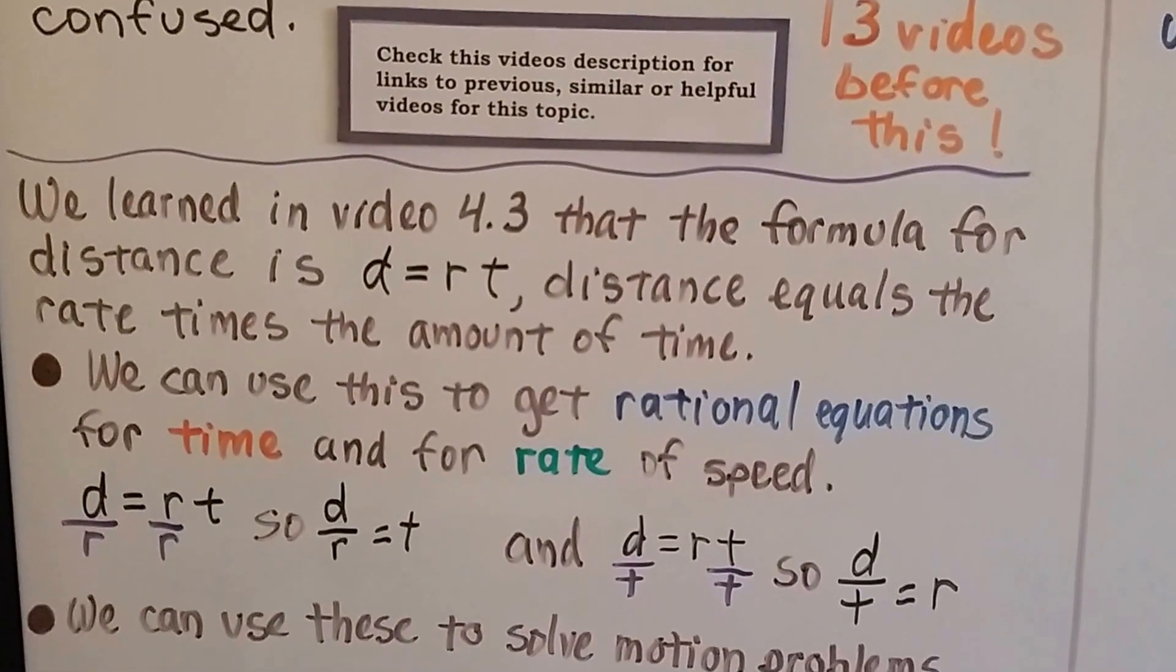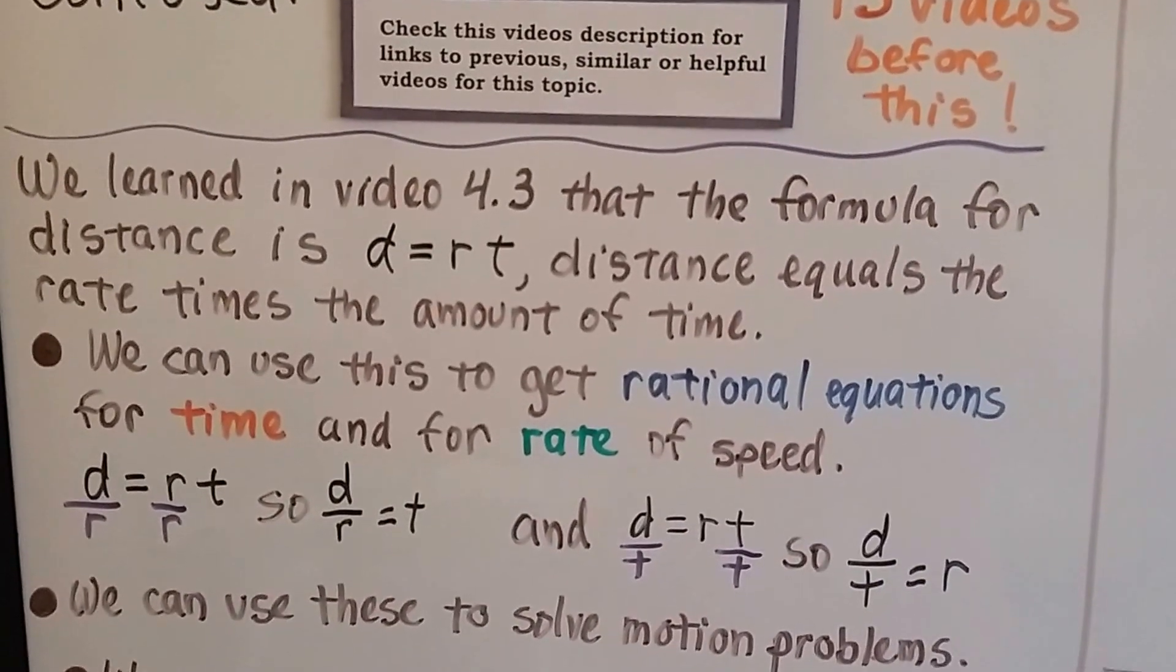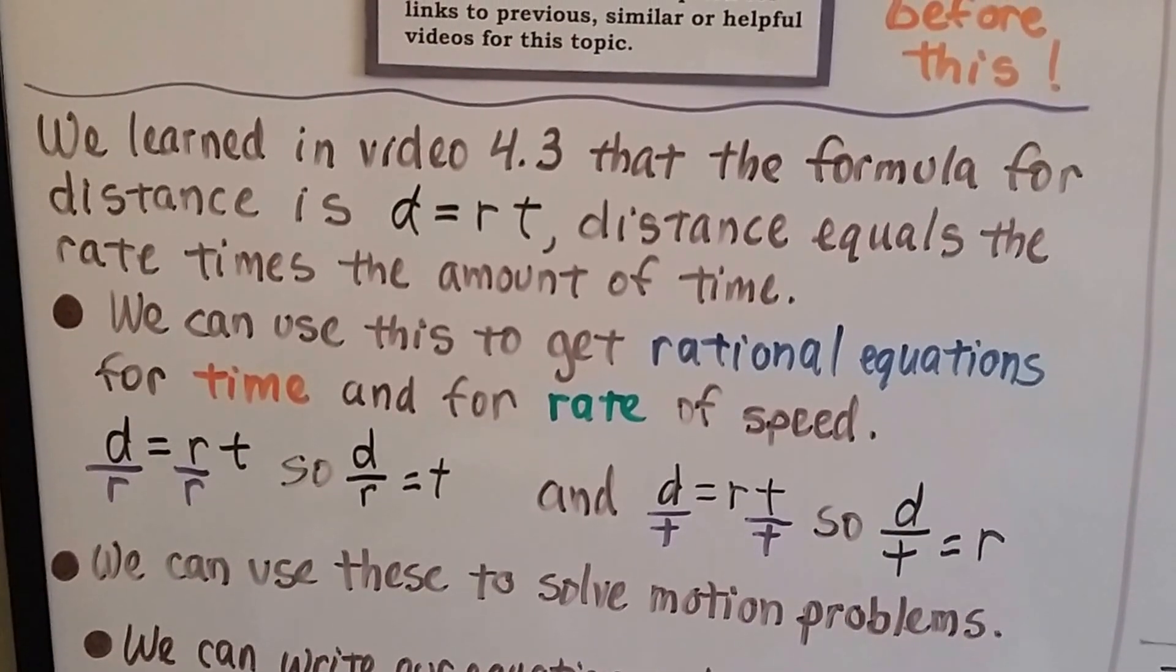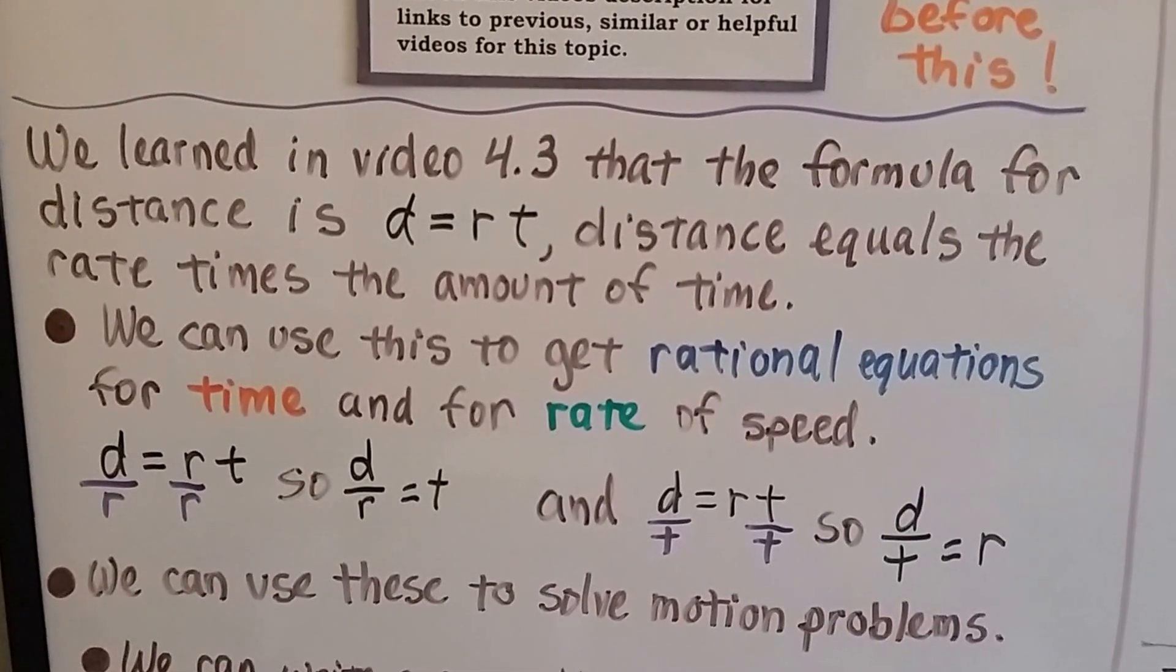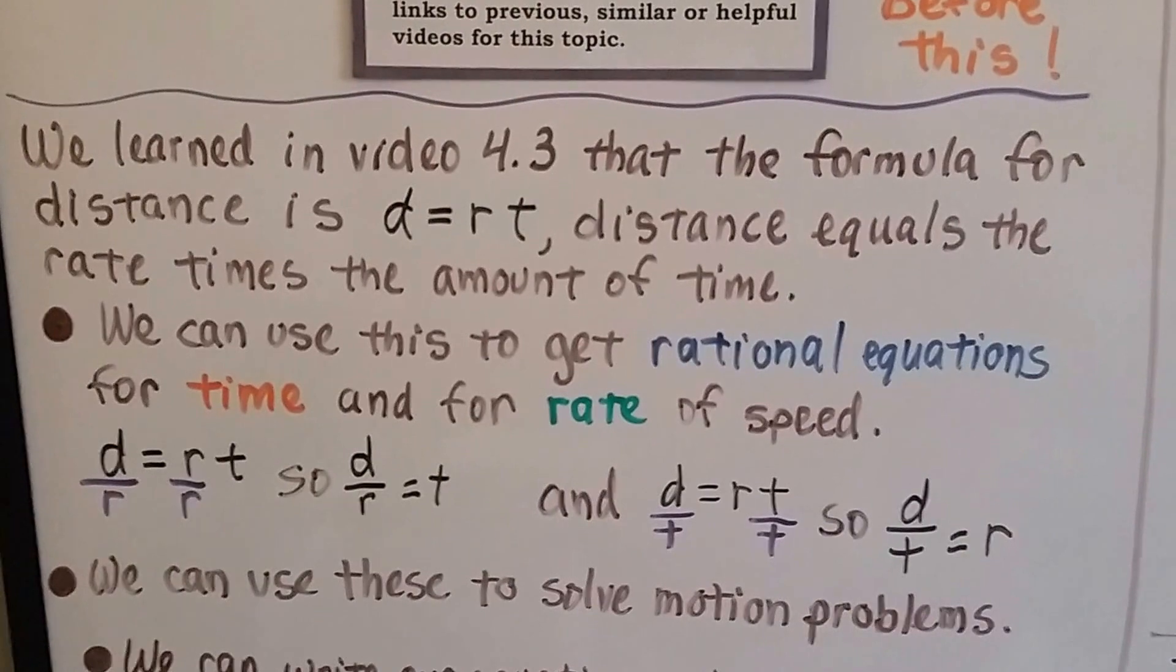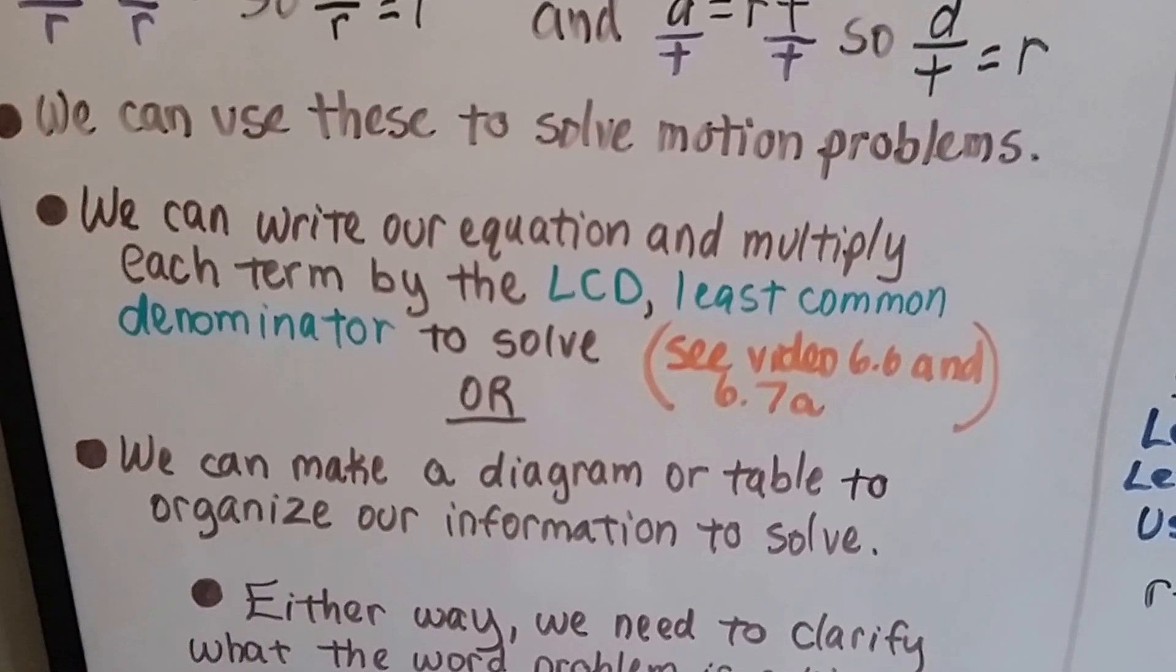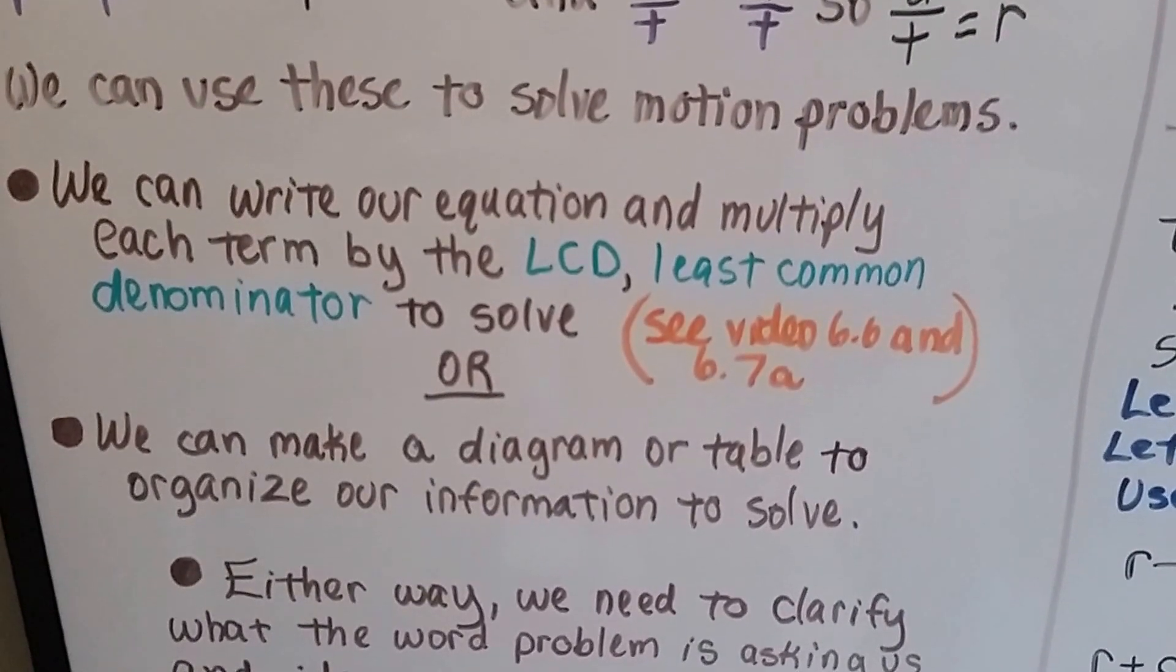So we learned in video 4.3, chapter 4, that the formula for distance is d equals rt, that's distance equals the rate times the amount of time, and we can use this to get rational equations for time and for rate of speed. So d equals rt can be divided on both sides by that r. So we'll get d over r equals t, because we cancel out the r as a 1, and we can do the d equals rt and divide both sides by the t to get t over t equals 1, so that we'll have d over t equals r. I'm going to switch that formula around for us. We can use these to solve motion problems. We can write our equations and multiply each term by the LCD, that least common denominator to solve. Now we covered that in 6.6 and 6.7a, and those links are in the description also.